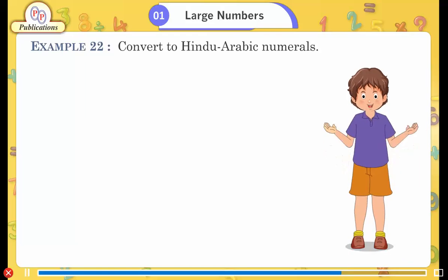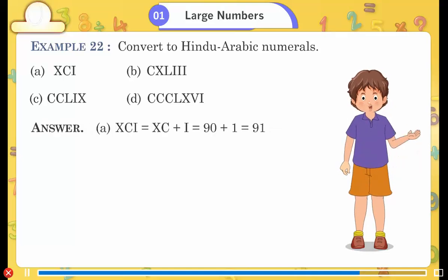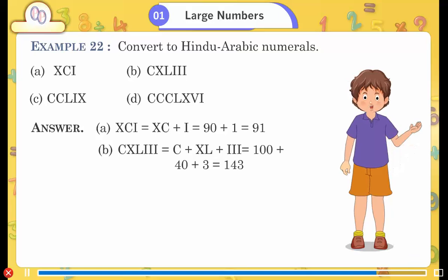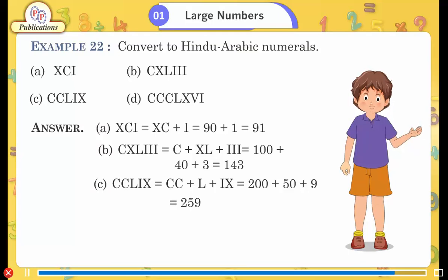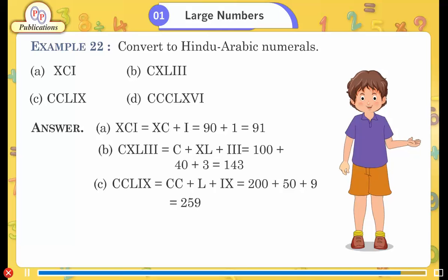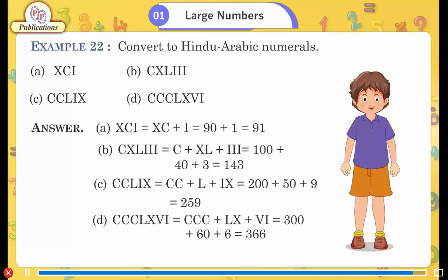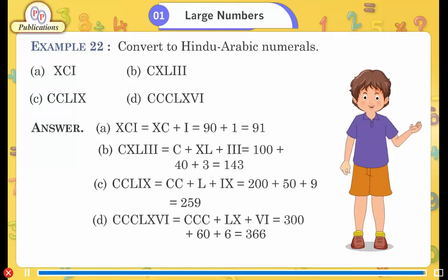Example 22: Convert to Hindu-Arabic numerals. a. XCI = XC + I = 90 + 1 = 91. b. CXLIII = C + XL + III = 100 + 40 + 3 = 143. c. CCLIX = CC + L + IX = 200 + 50 + 9 = 259. d. CCCLXVI = CCC + LX + VI = 300 + 60 + 6 = 366.